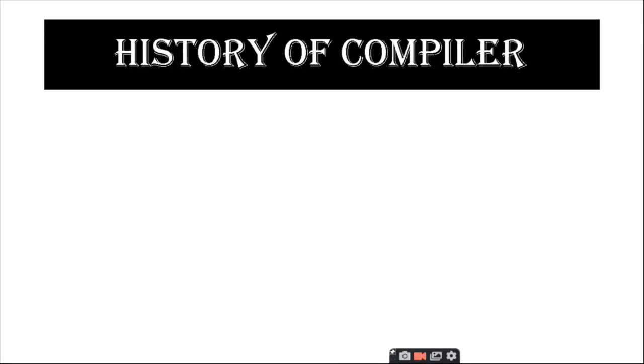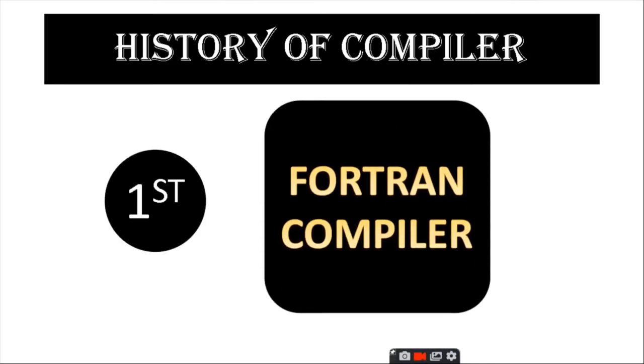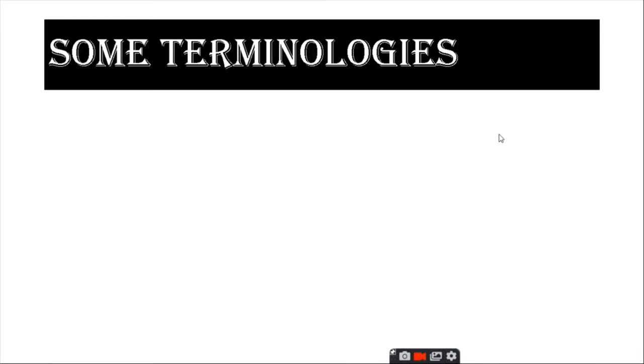History of compiler. Around the 1950s, the first compilers started to appear. The first compiler took 18 staff years to implement. It involves concepts like lexical analysis, tokens, and three address code.